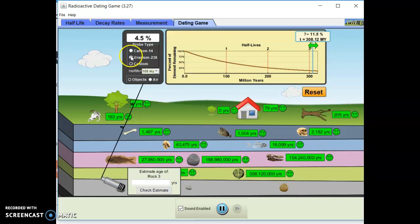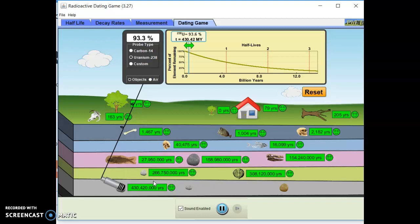We are on rock number three. Uranium is golden. Let's do ninety-three point three. Four hundred and thirty million. We're in twenty thousand. Okay.